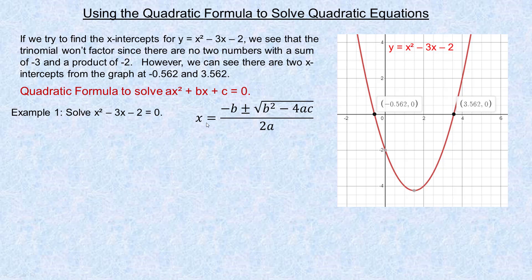So this is the quadratic formula: x equals negative b plus or minus the square root of b squared minus 4ac, all over 2a, where a, b, and c are the coefficients of the quadratic term, the linear term, and the constant. You should always start by writing the formula down, then identify what a, b, and c are before substituting numbers in.